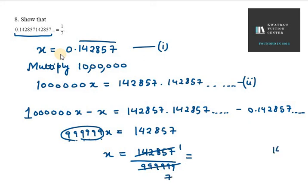You can verify this: 142857 times 7 equals 999999. Therefore, 0.142857 repeating equals 1/7. That's the solution to question number 8.